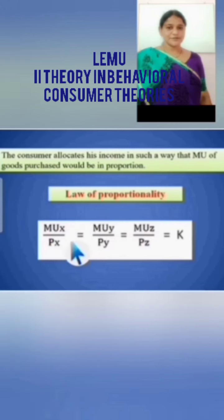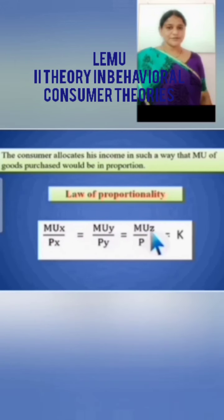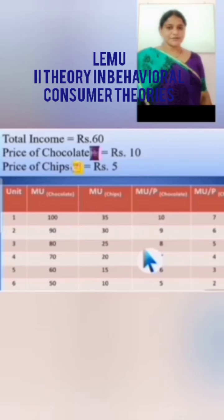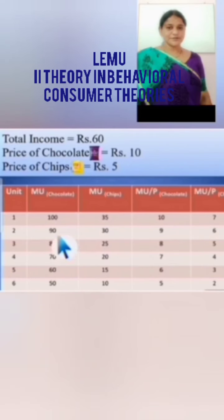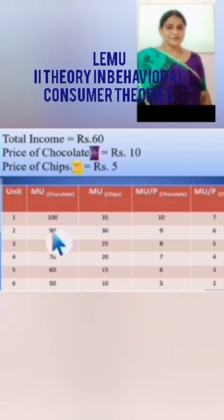That's why LEMU is called the law of proportionality. Suppose there are 3 goods and I am doing expenditure on 3 goods out of my income. Here is an example: suppose you have a total income of 60 rupees. We will take 2 goods here, because LEMU compares 2 or more goods. The two goods are chocolate and chips. Price of chocolate is 10 rupees and price of chips is 5 rupees. Here I have shown the MU of chocolate and MU of chips.